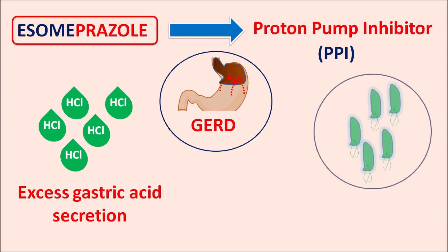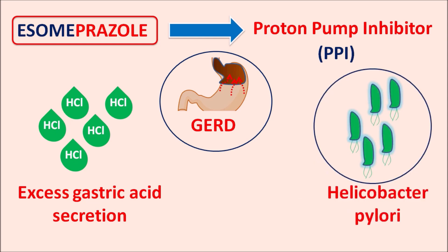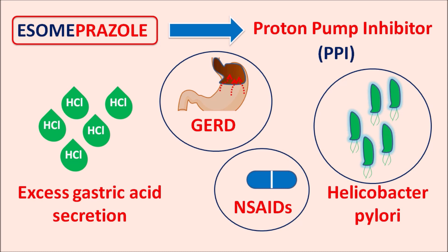Similarly, infections such as H. pylori can increase the gastric acid secretion, where these proton pump inhibitors can control this gastric acid secretion along with other antibiotics. Gastric acid can also be excessively secreted in patients who are using NSAIDs, non-steroidal anti-inflammatory drugs, for long-term treatment.